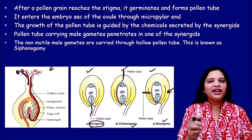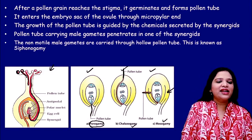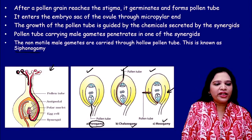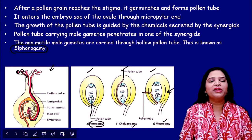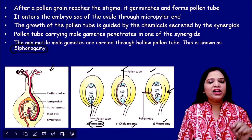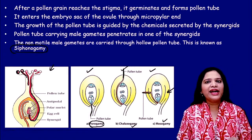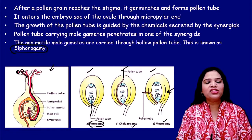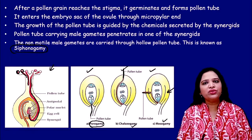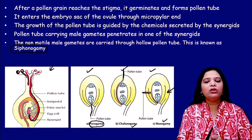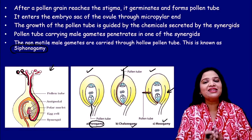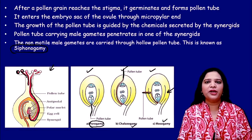Here we must understand a term called siphonogamy. The non-motile male gametes are carried through the hollow pollen tube — this is called siphonogamy.